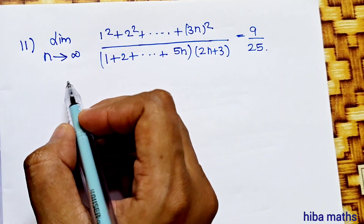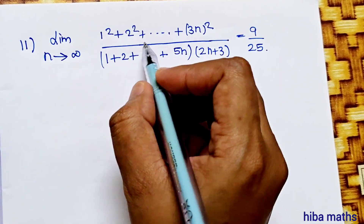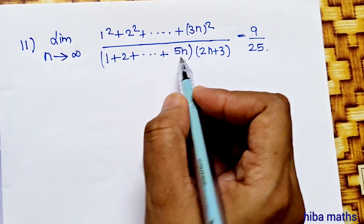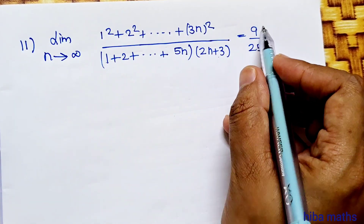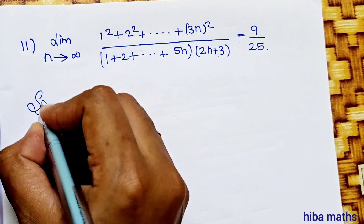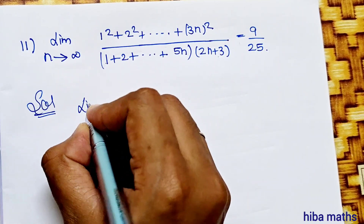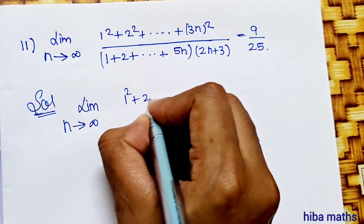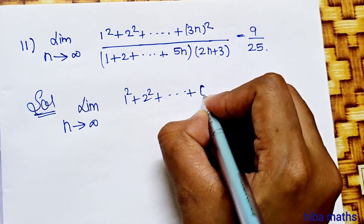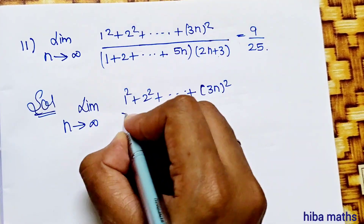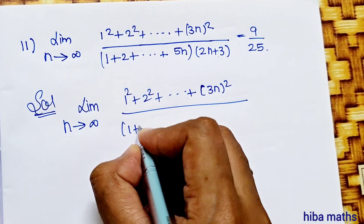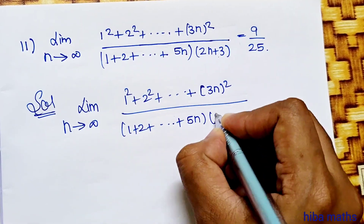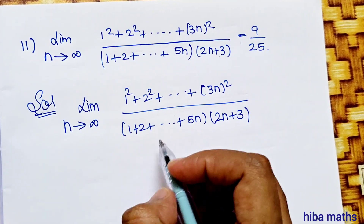Second subdivision: show that the limit as n turns to infinity of 1 squared plus 2 squared up to (3n) squared, divided by (1 plus 2 up to 5n) times (2n plus 3), is equal to 9 by 25. This is the proof. Solution: limit as n turns to infinity of 1 squared plus 2 squared up to (3n) squared, divided by (1 plus 2 plus up to 5n) times (2n plus 3).